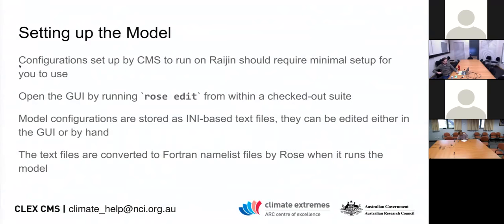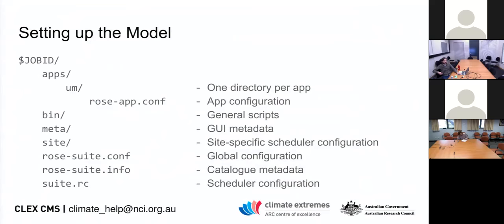When you run the model, the text config files are converted into namelist files that are handed to the model. The Rose directory is split up into several things. There are 'apps', which are basically jobs getting run on Raijin. You have 'um' for the actual atmosphere model, and also 'fcm_make' which is the build configuration — useful if you're changing optimisation levels. You can also add general scripts in a 'bin' directory and run those from jobs within the suite.